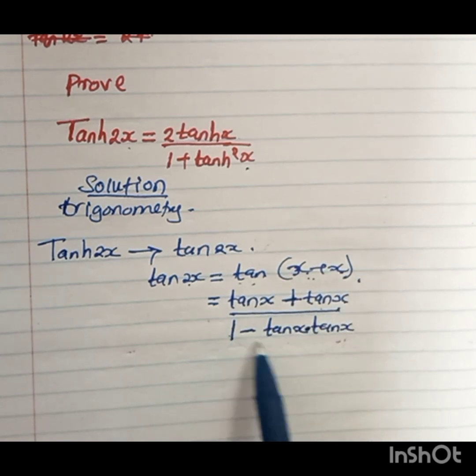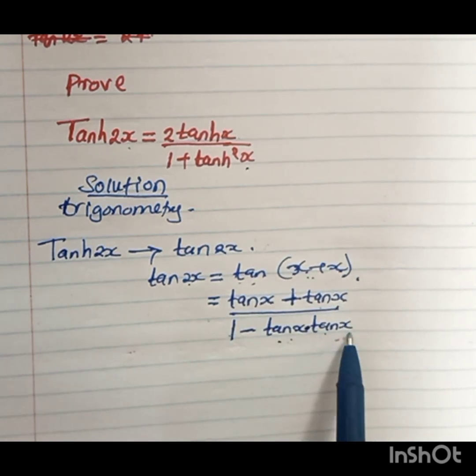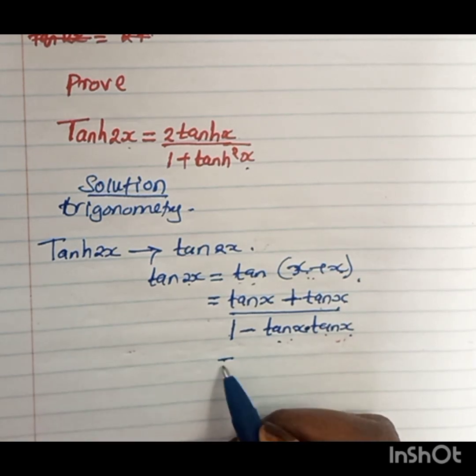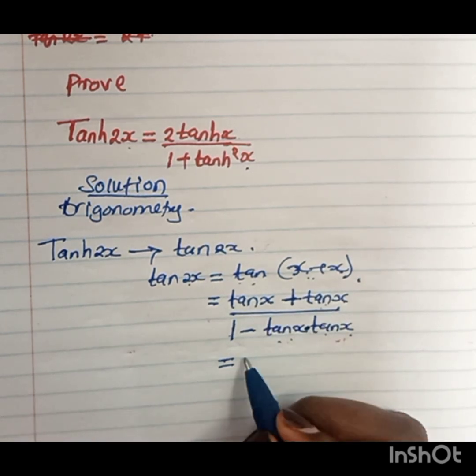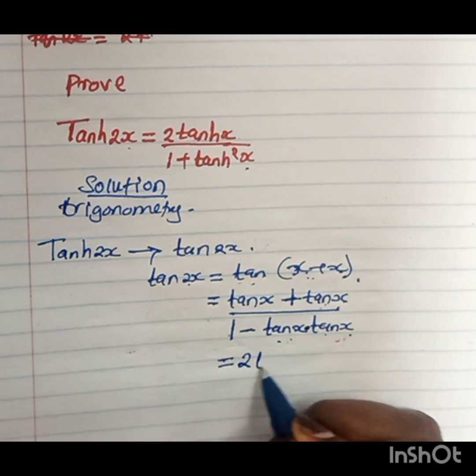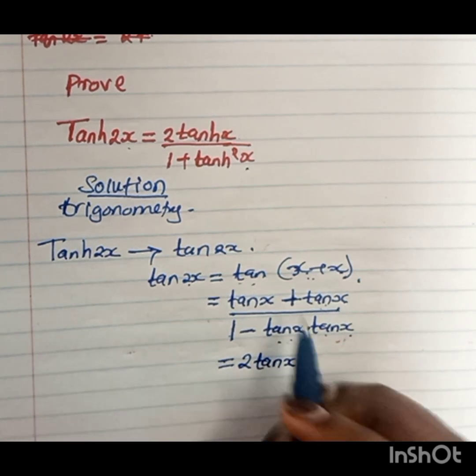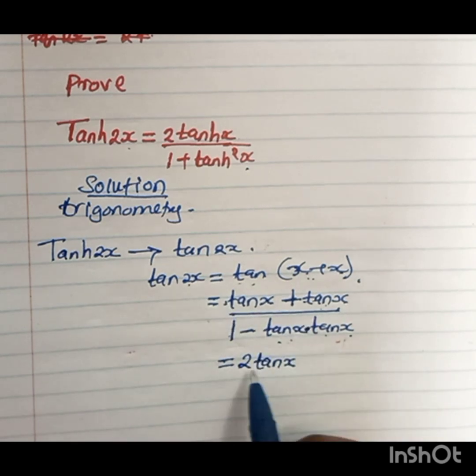So this equals tan x plus tan x becomes 2 tan x, because the coefficients here are 1 and 1, so 1 plus 1 equals 2.